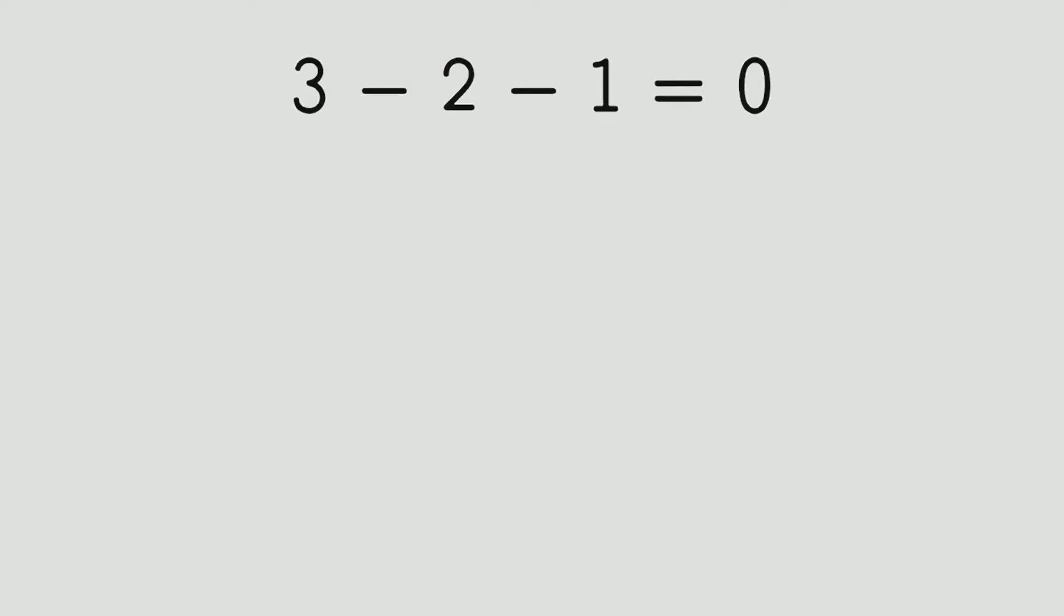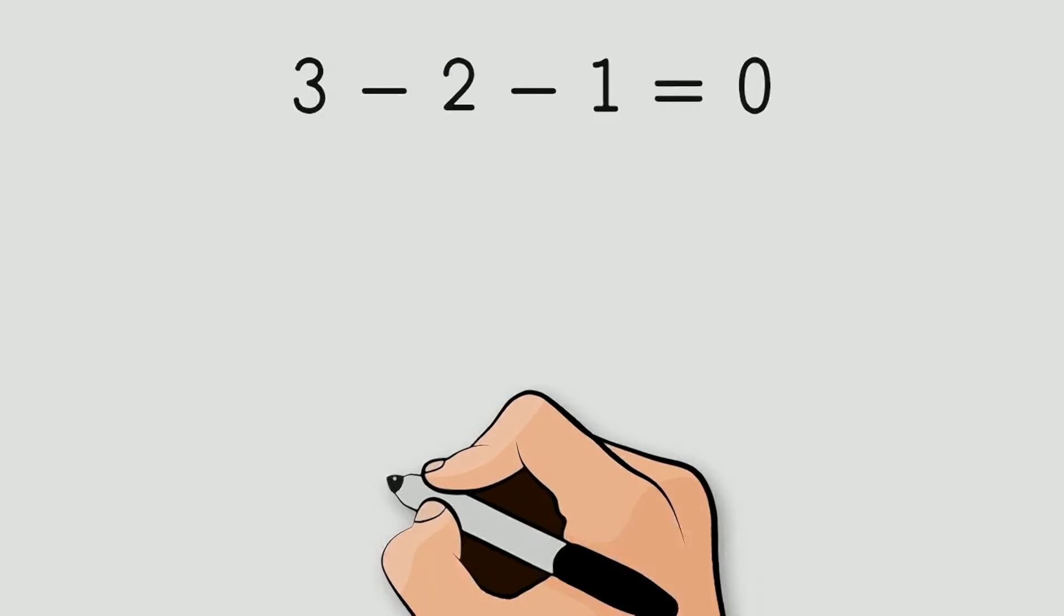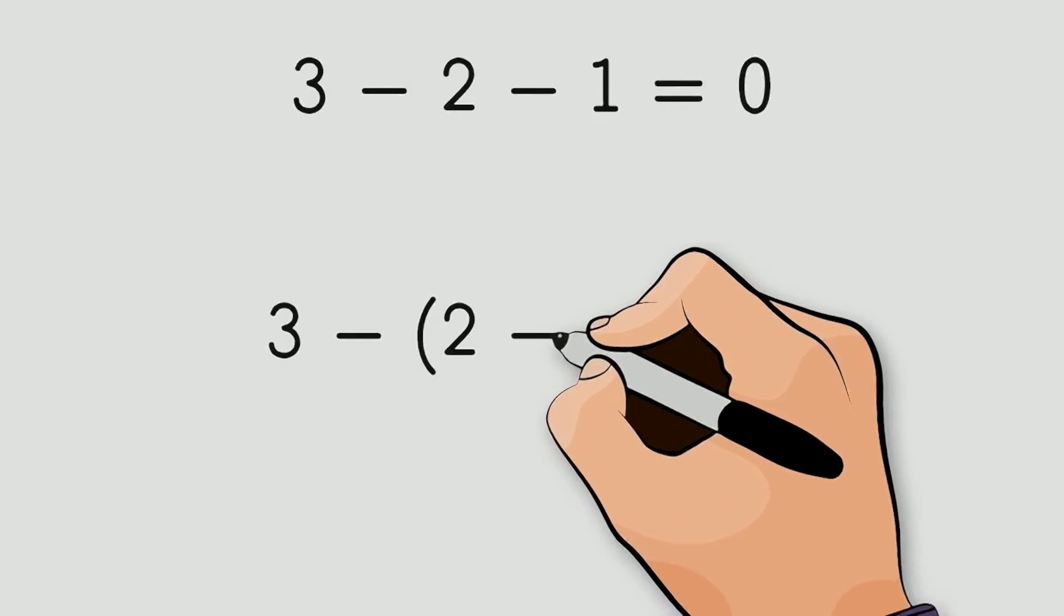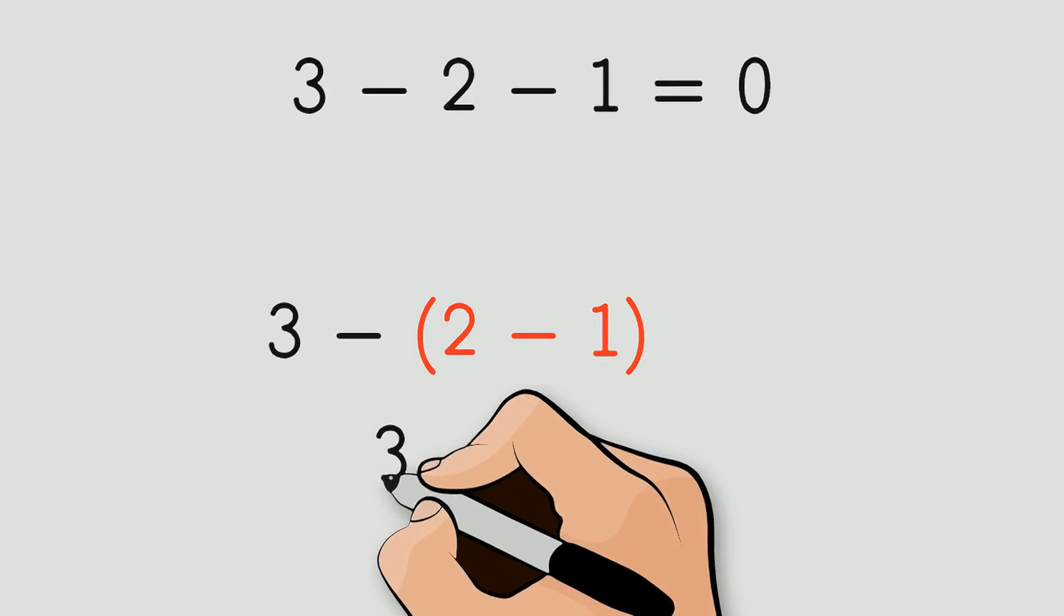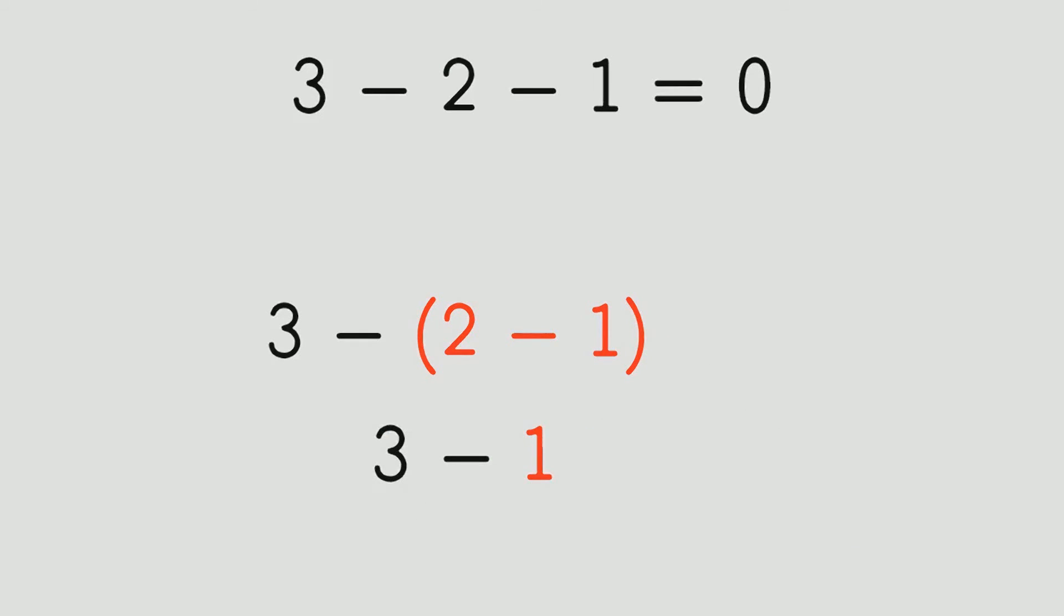Now, imagine we want to solve the following problem. 3 minus, open parenthesis, 2 minus 1, close parenthesis. How much is that? As we can see, 2 minus 1 is in parentheses. It means that first we have to solve this subtraction. 2 minus 1 gives us 1. Now we have 3 minus 1, which gives us 2.